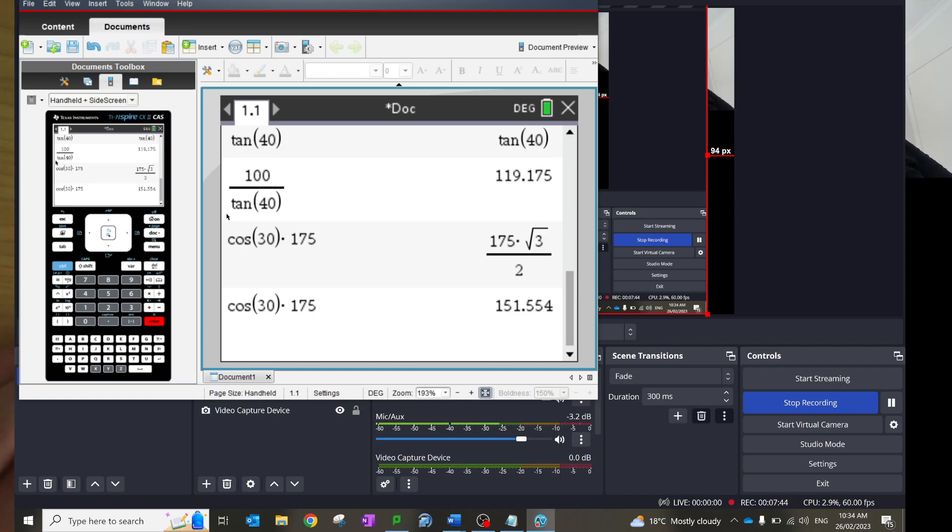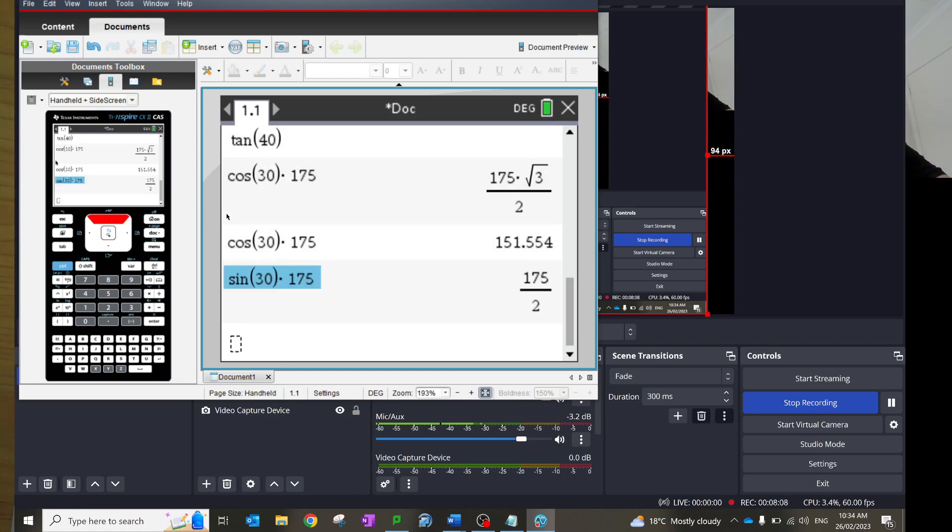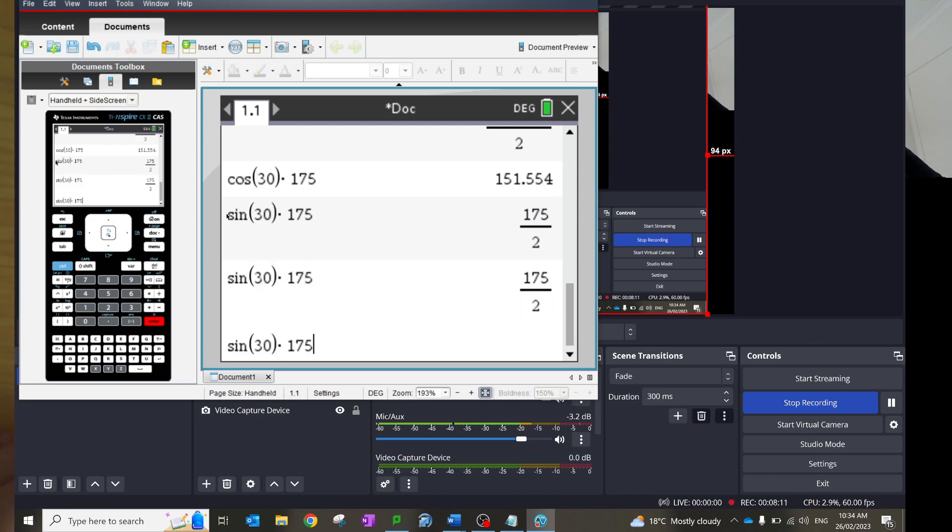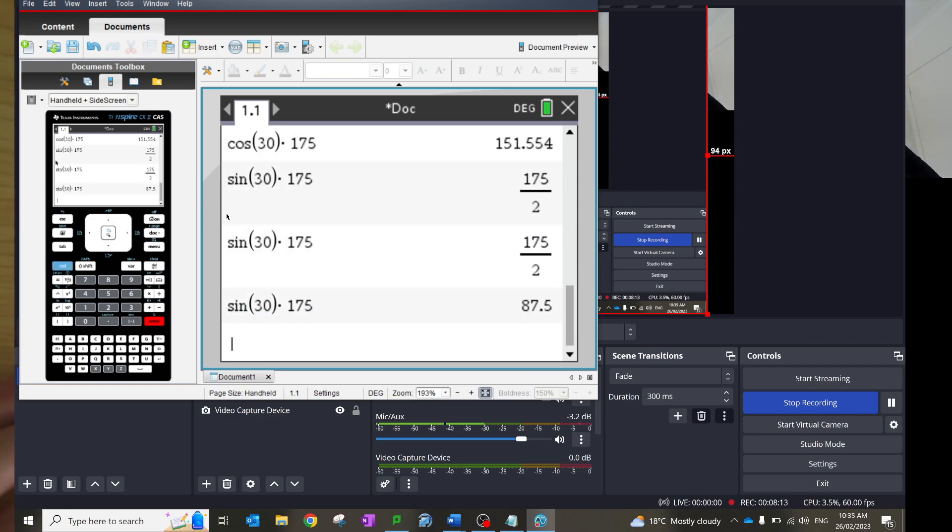And now the y is opposite and hypotenuse, so it's just sine, which is basically the same. Alright. Sine 30, sorry, times 175 gives us y. It gives me y equals 87.5 kilometers. Alright.